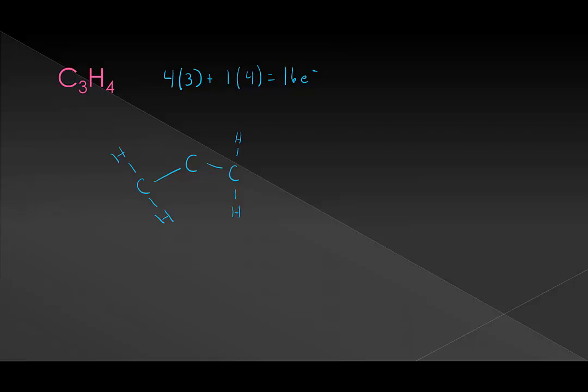Now if we try to distribute our remaining electrons, you can see that we have 12 electrons so far. We have 4 left. And you can see that we end up short, because right now only this carbon has a full octet. This one and this one are both short electrons. So we need to add 2 more bonds.